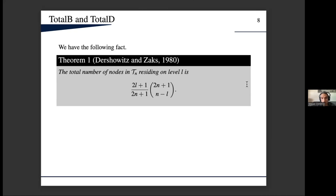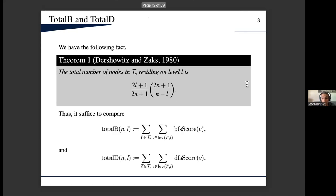Fortunately, we have this fact by Dershowitz and Zacks, 1980, which gives us the number of nodes residing on level l. This means that it suffices to find these two quantities which I called total B and total D. These are just the summations of these BFS scores and DFS scores for all these nodes on level l. So our goal will be to compute these two quantities and to compare them.